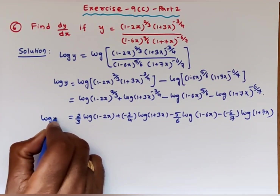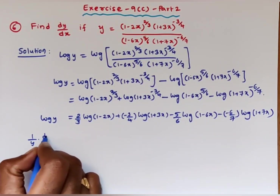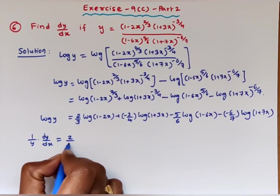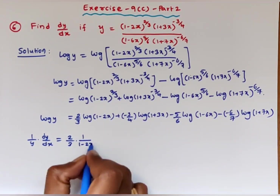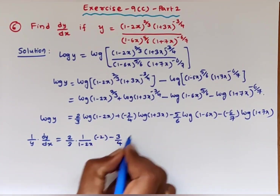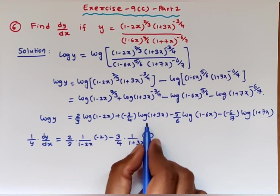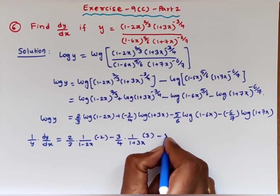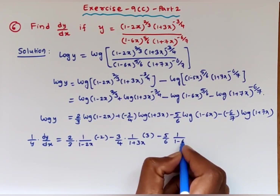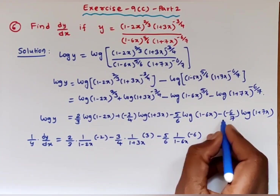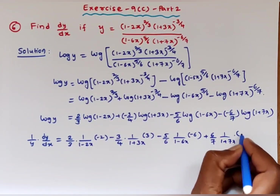Differentiating both sides with respect to x, (1/y)·(dy/dx) equals (2/3)·[1/(1 minus 2x)]·(minus 2) plus (minus 3/4)·[1/(1 plus 3x)]·3, minus (5/6)·[1/(1 minus 6x)]·(minus 6), plus the derivative of the last term.